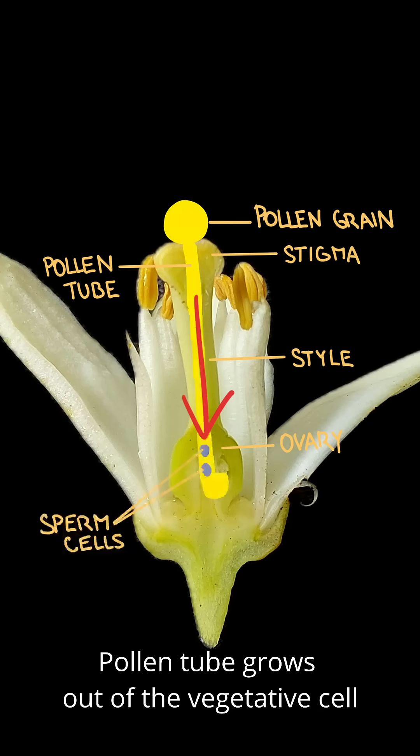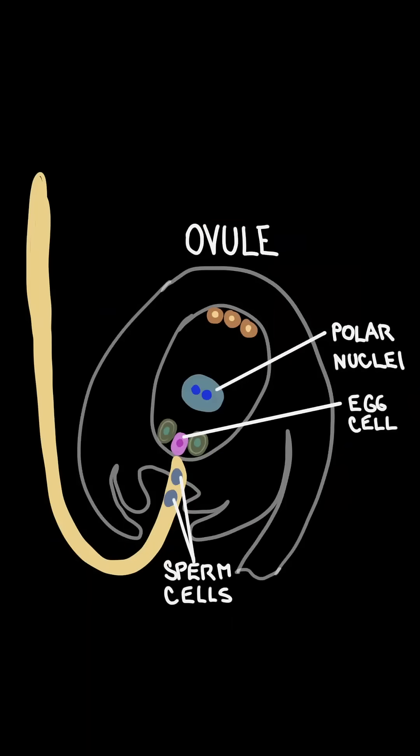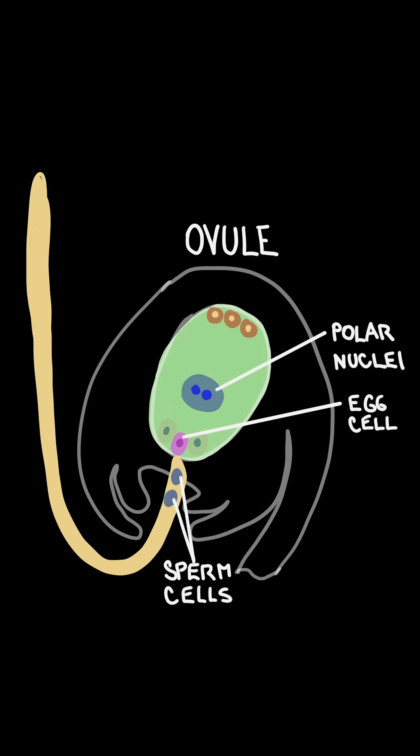During this process, the other cell — the reproductive one — divides and creates two sperm cells that travel down the pollen tube. Eventually, the pollen tube reaches an ovule, enters it usually via the micropyle, which is a small opening, and delivers the sperm cells inside.